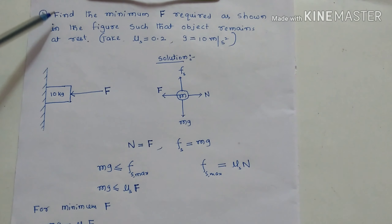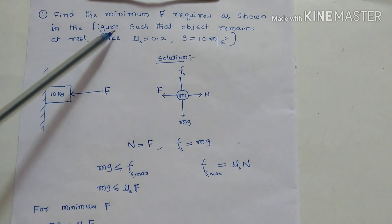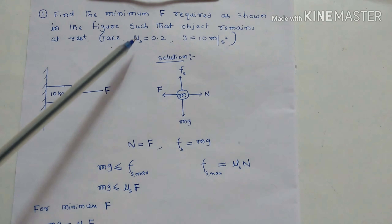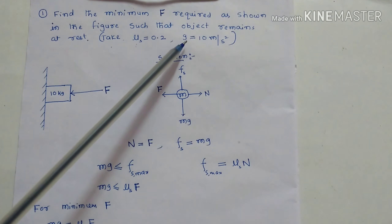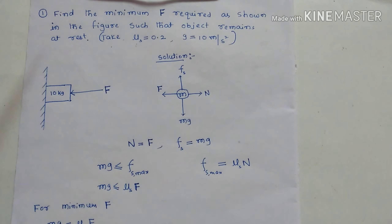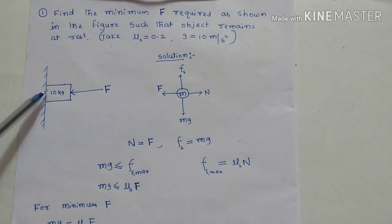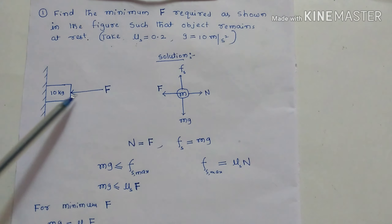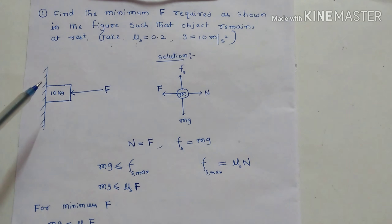This is question number one. Find the minimum force F required as shown in the figure such that the object remains at rest. Given: mu s coefficient of static friction equal to 0.2, and g acceleration due to gravity equal to 10 meters per second squared. This is one rigid wall; one object of mass 10 kg is pressed to the wall with a force F applied along this direction, such that this object should not fall down.